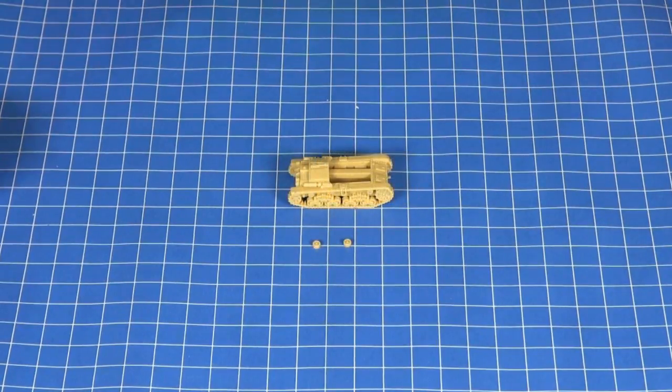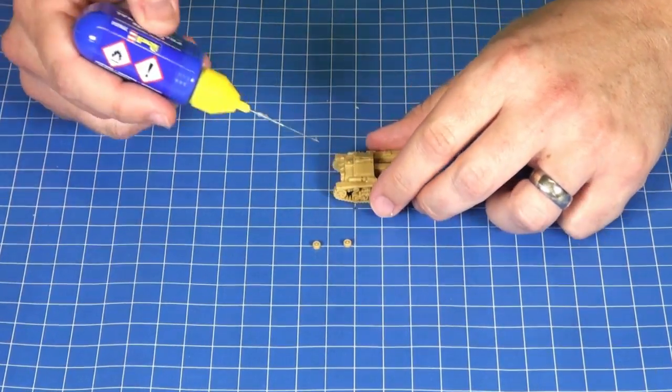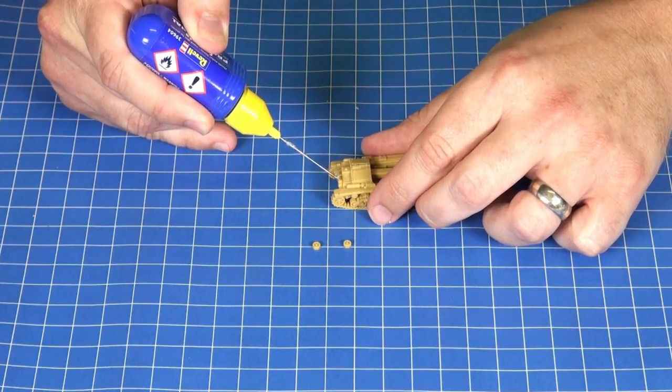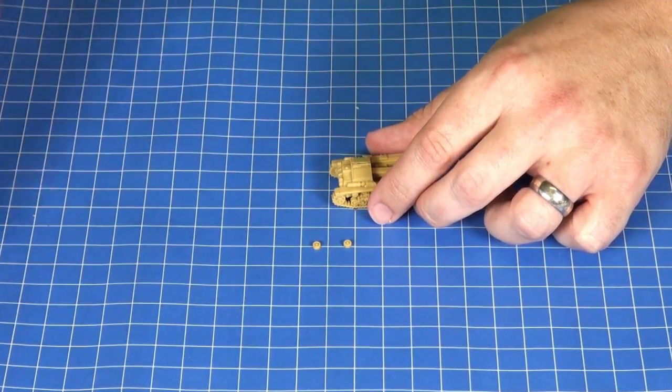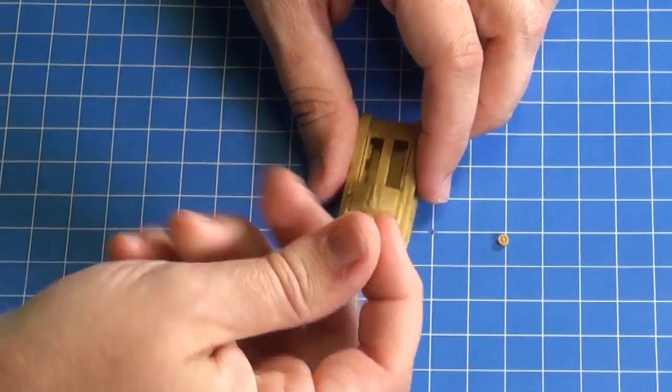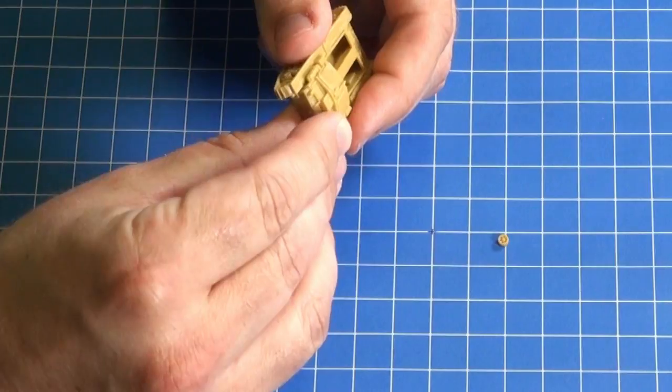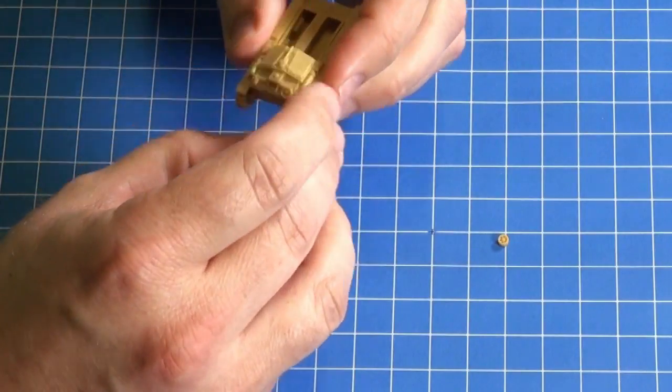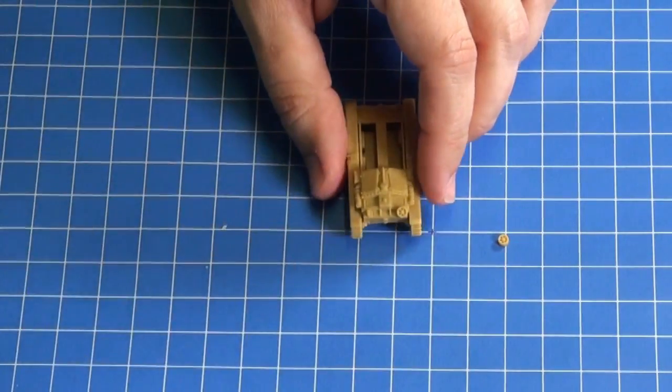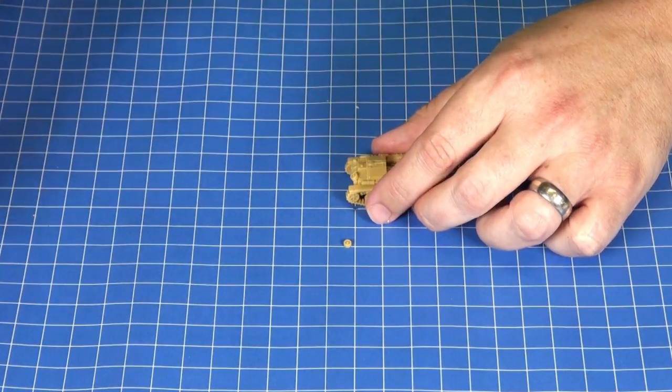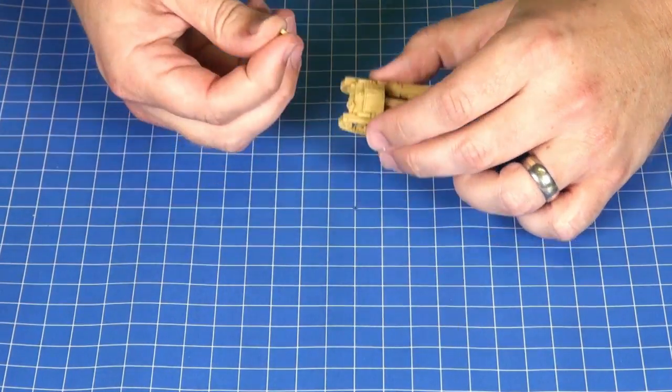Next up we'll add the spare wheels onto the back of the engine deck. These have been designed with a gap, so that they'll have a nice positive fit on the mounting pieces. They are angled, so before you actually attach them make sure you've double checked which way they're going to go on. It's always a good idea to do a dry fit first.